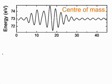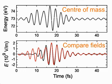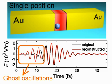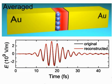To reconstruct the field, we performed the center of mass analysis, and then we compared the reconstructed field with the original field used for the calculation. When spatial averaging is not included, there are ghost oscillations at early delays, and the reconstruction is poor. When we include spatial averaging of the electron position, that will be automatically present in the experiment, the ghost oscillations are suppressed, and the plasmonic field can be reconstructed with high accuracy.